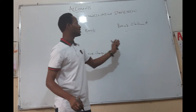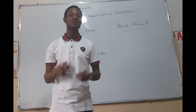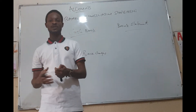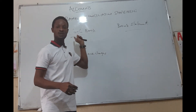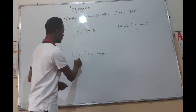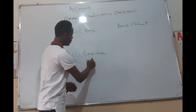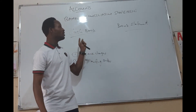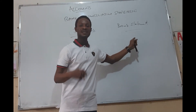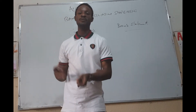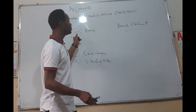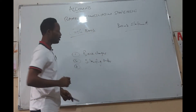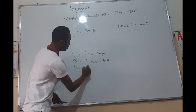Bank charges is an amount that the bank will charge for keeping the money of the business with them. Until the bank statement is sent to the business, it will not be known or shown in the cash book. Another cause of disagreement is a standing order — that's an order by the firm to the bank to pay certain amounts regularly on behalf of the business. This means it will appear in the bank statement but not in the cash book.